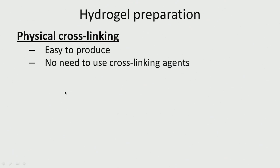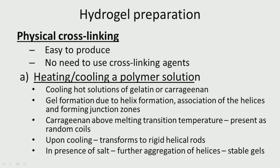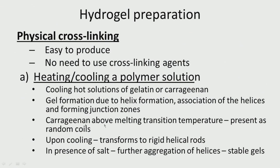How do you prepare hydrogel? We can do it by physical cross-linking or through chemical processes. Physical methods are easy to produce and require no cross-linking agents like glutaraldehyde. One approach is heating and cooling a polymer solution — when you cool hot solutions of gelatin or carrageenan, it forms a gel due to helix formation. As the temperature is lowered, these materials form helical structures, and these helices have junctions and crevices where water can be trapped. Carrageenan above its melting transition temperature forms random coils, but on reducing temperature it forms rigid helical rods and thus hydrogels.